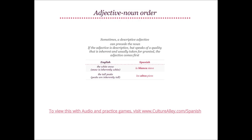Sometimes, even a descriptive adjective can precede the noun. If the adjective is descriptive but speaks of a quality that is inherent and usually taken for granted, the adjective comes before the noun. The white snow translates to la blanca nieve — snow is inherently white, hence blanca comes before nieve. Similarly, the tall peaks will be los altos picos — peaks are inherently tall, so altos comes before picos.